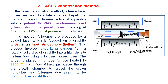In this method, fullerenes are produced by a pulsed laser focused on a graphite target in a helium atmosphere. The process involves vaporization of carbon from the graphite target in a high-density helium flow by the laser. The target is placed in a tube furnace heated at 1200°C, and the flow of inert gas passes through the ablated carbon, carrying it through the growth chamber to be collected at the cooler part of the apparatus, referred to as the cooler finger.